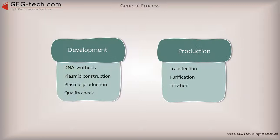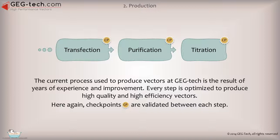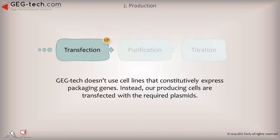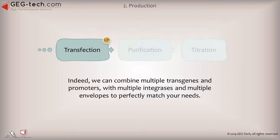All the vectors provided by GEGTech.com go through the same production process. The current process used to produce vectors at GEG Tech is the result of years of experience and improvement. Every step is optimized to produce high-quality and high-efficiency vectors, and checkpoints are validated between each step. GEG Tech doesn't use cell lines that constitutively express packaging genes. Instead, our producing cells are transfected with the required plasmids. This process gives us a unique flexibility in the combination of plasmids, thereby achieving an extremely high degree of flexibility in the particles that can be obtained. Indeed, we can combine multiple transgenes and promoters with multiple integrases and multiple envelopes to perfectly match your needs.